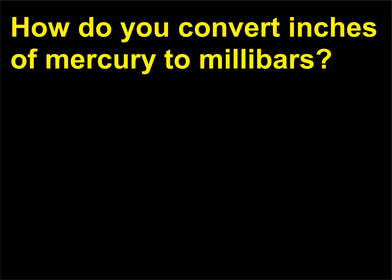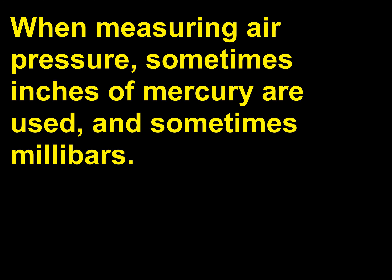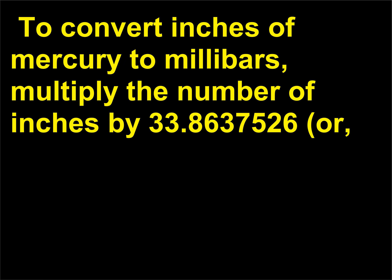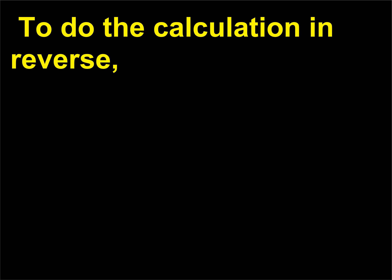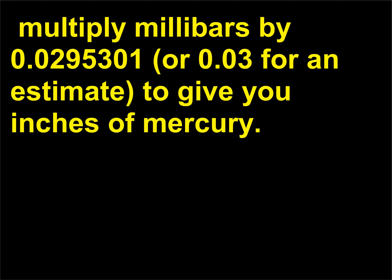How do you convert inches of mercury to millibars? When measuring air pressure, sometimes inches of mercury are used and sometimes millibars. To convert inches of mercury to millibars, multiply the number of inches by 33.8637526, or 33.86 will give you an accurate enough measurement. To do the calculation in reverse, multiply millibars by 0.0295301, or 0.03 for an estimate, to give you inches of mercury.